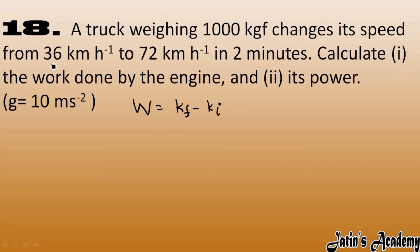36 km per hour is actually the initial velocity which we will take in meter per second, which is 5 by 18. So it cancels out, so initial velocity we have 10 meter per second. And final velocity, we have 72 km per hour which is 72 into 5 by 18 which is 20 meter per second.